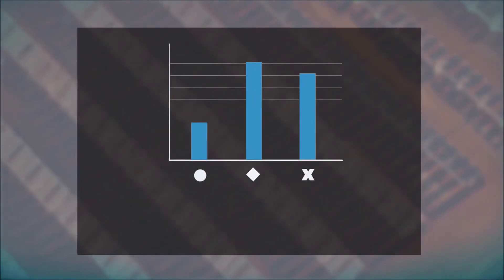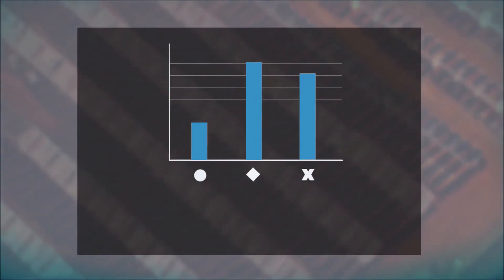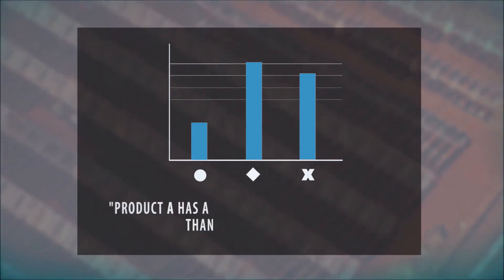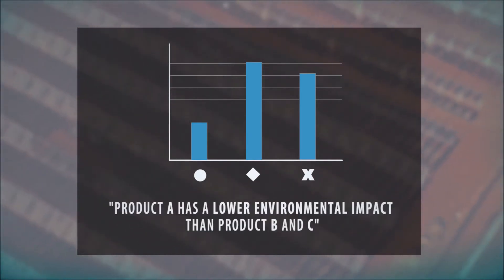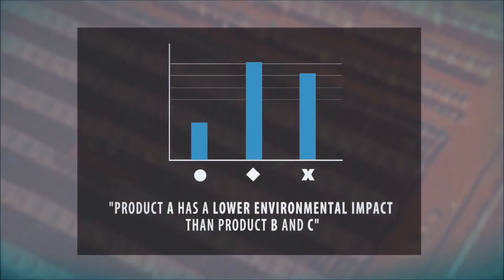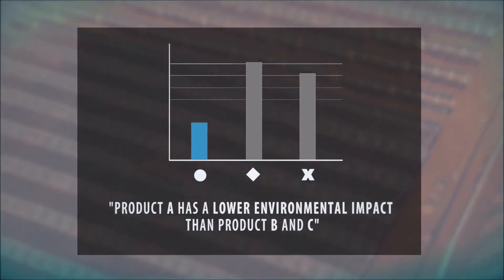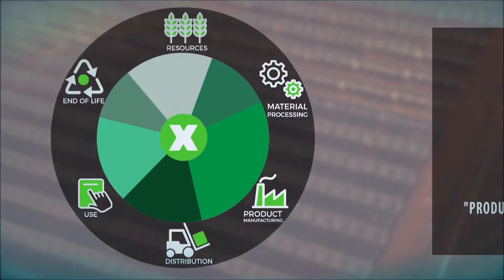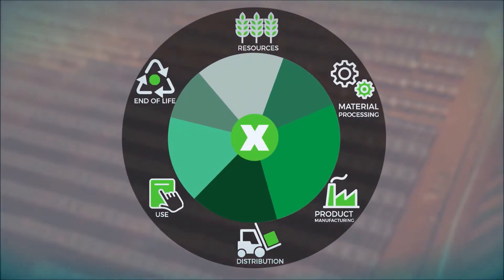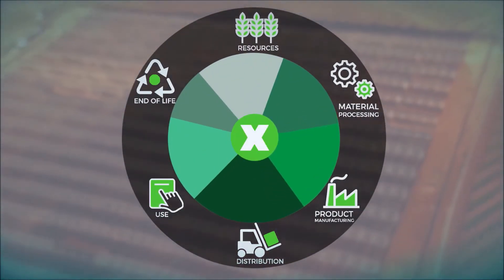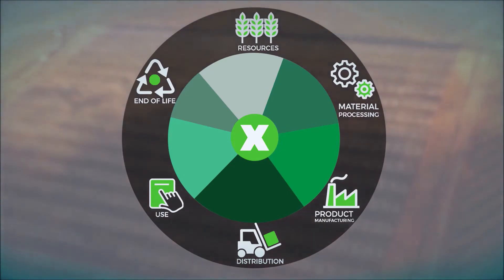Results can be used for marketing purposes, like: Product A has a lower environmental impact than Product B and C. Or for R&D: We know how we can improve the sustainability of this product.